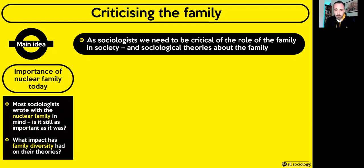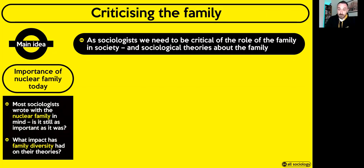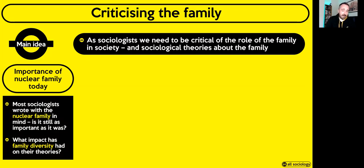Let's look at four ways we can start to criticise the role of the family. First and foremost, it's about the way that sociologists have tended to focus on the nuclear family, or what they might refer to as the conventional family. Most sociologists wrote about the nuclear family and didn't really consider family diversity. We've got to think about how society is very different from when people like Marx, Durkheim, Parsons and Murdoch were writing. Is the nuclear family as important as it once was? Probably not.